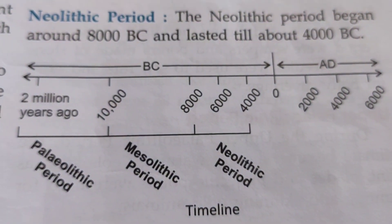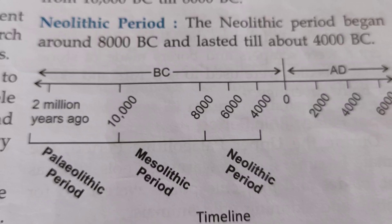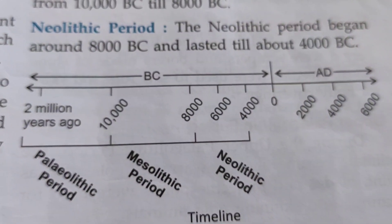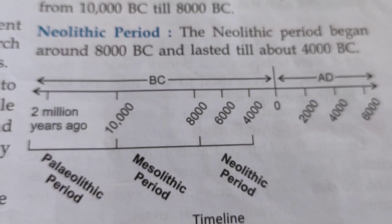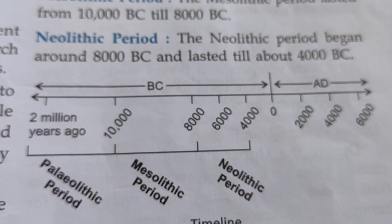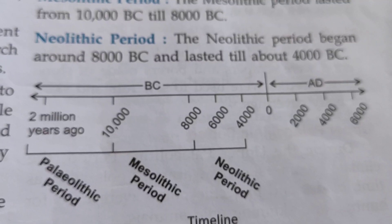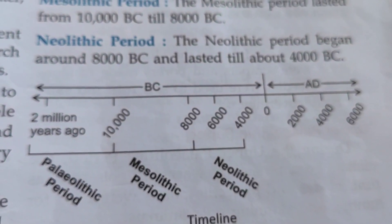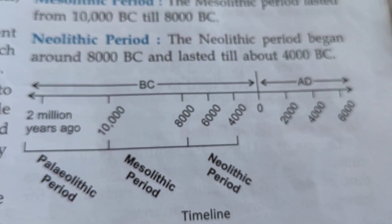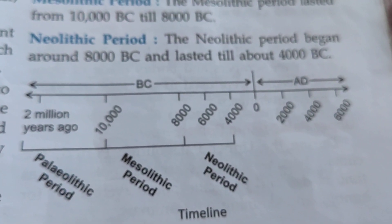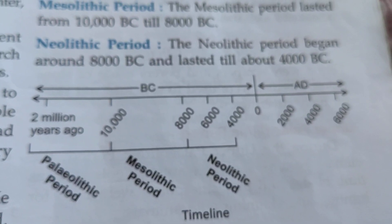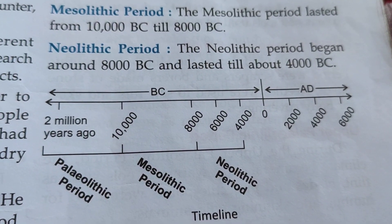Arliman was a hunter-gatherer. It means that he moved from place to place in search of food. He depended on nature for all his needs. Arliman was also a nomad. He travelled great distances to find food. He fished, hunted for wild animals, and gathered berries, nuts, wild roots and other foods.